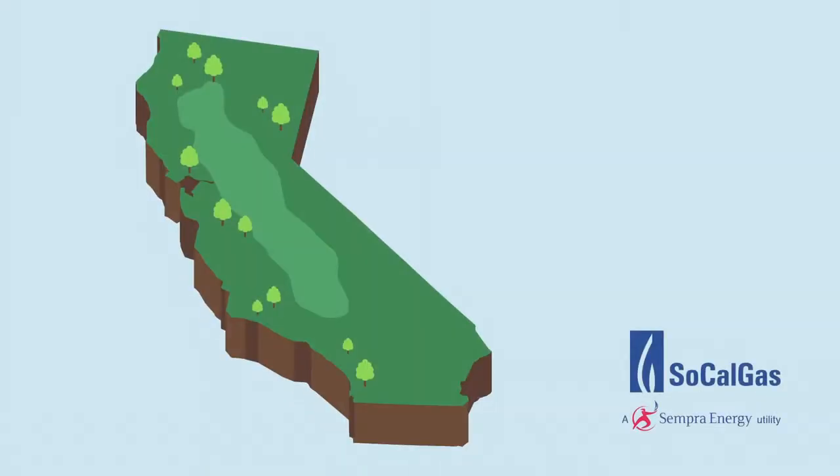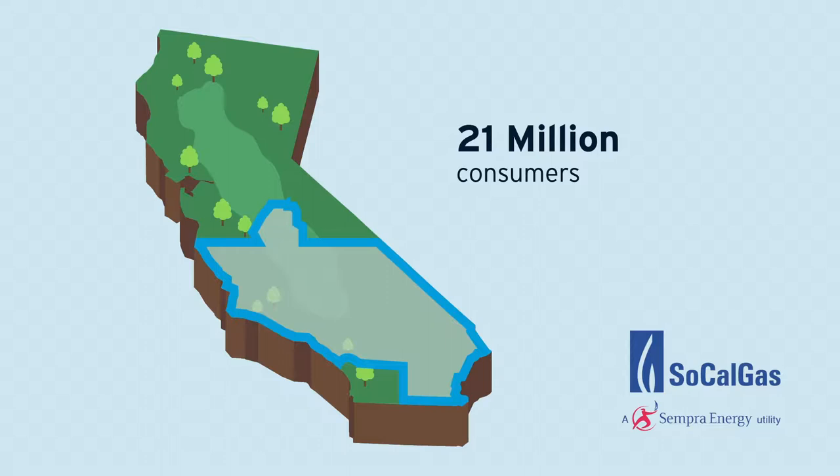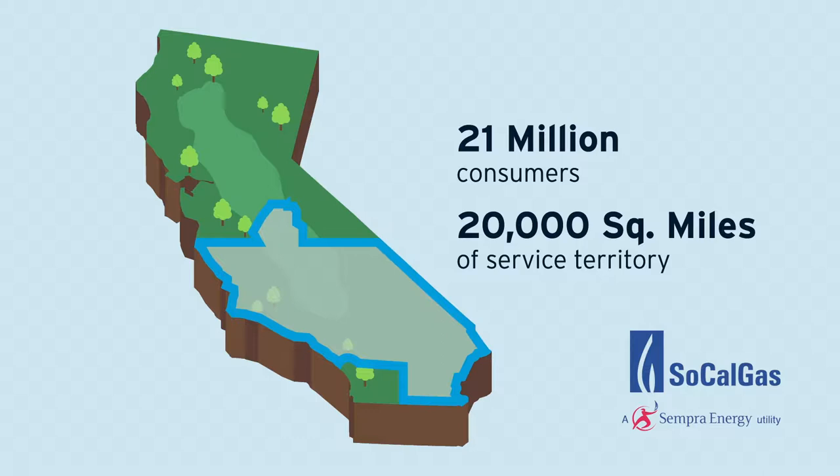As the largest natural gas distribution company in the nation, SoCalGas meets the energy needs of more than 21 million Central and Southern California consumers within a service territory spanning over 20,000 square miles.